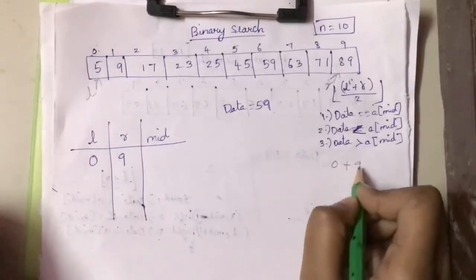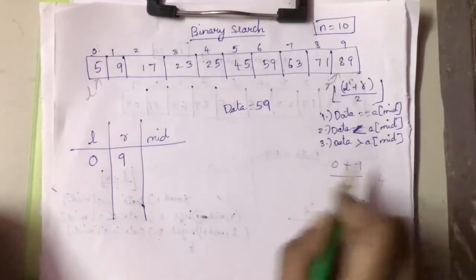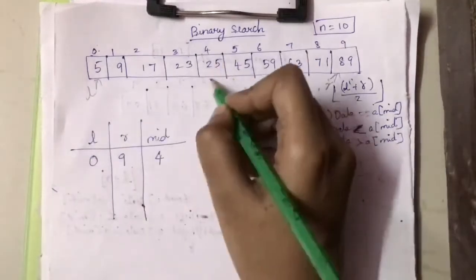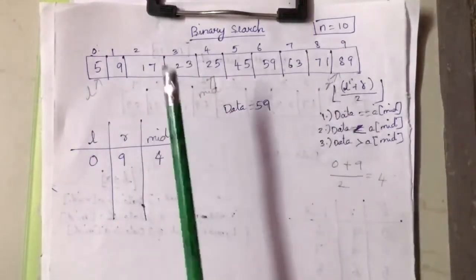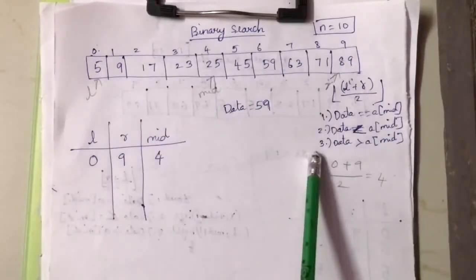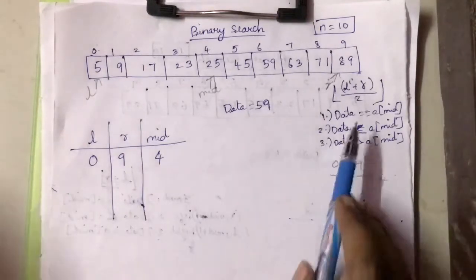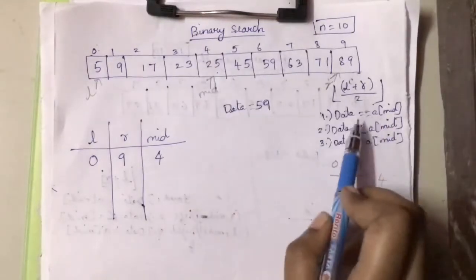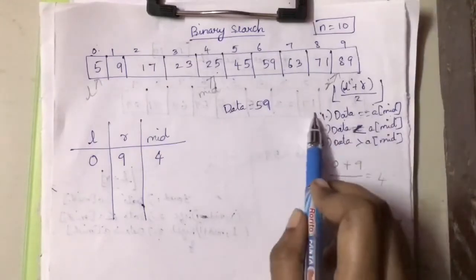The value of l is 0 and r is 9. Applying the formula: 0 plus 9 divided by 2 gives us 4, so the mid value is 4. Mid is pointing at index 4. Now we check: is data equal to a[mid]? a[4] is 25, and data is 59, so 59 equals 25 is false — the first condition fails.